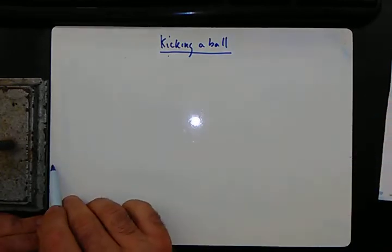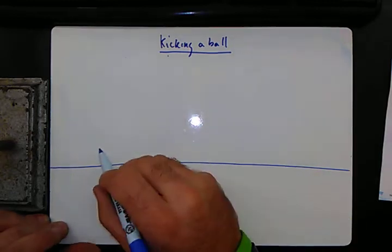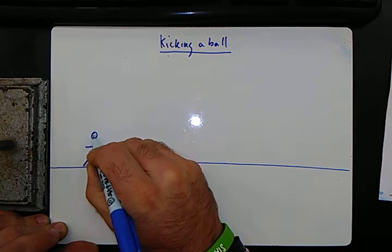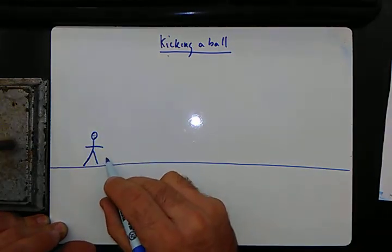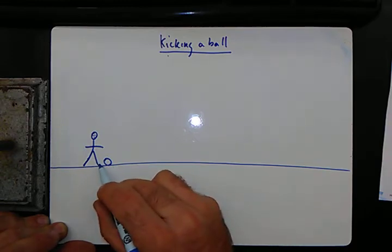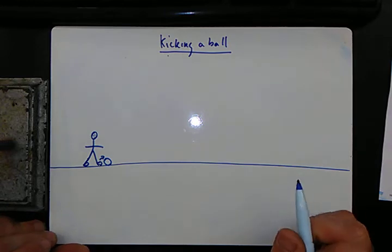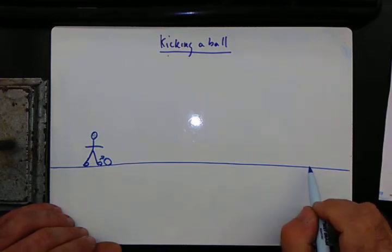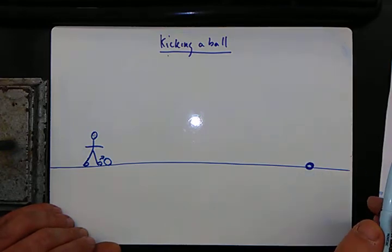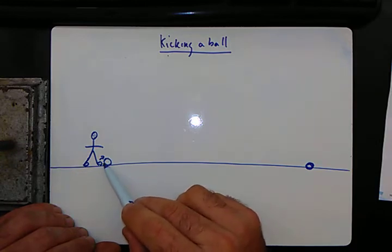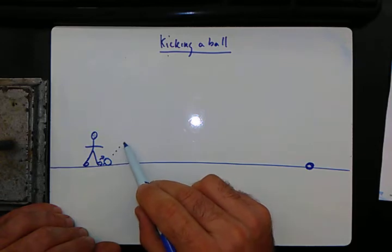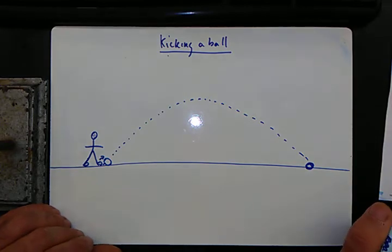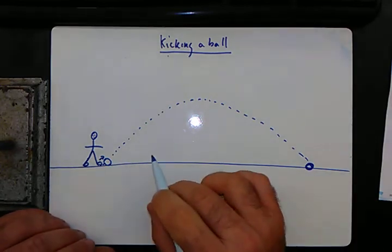So here we are. Here's the ground, here's my guy of science, and here's a soccer ball. This guy is going to kick the soccer ball. We want to know how far the soccer ball is going to land. We know that when we kick a soccer ball, we put a force on it, which sends it up in the air and then back down. So we've got a couple of things going on there.